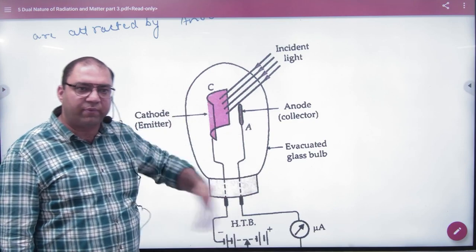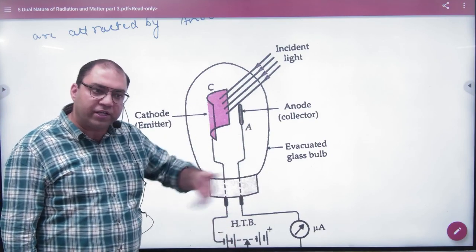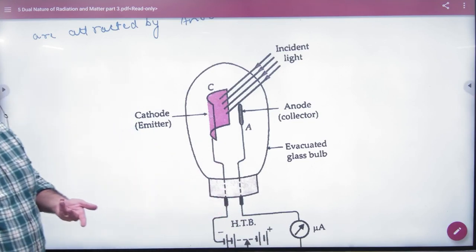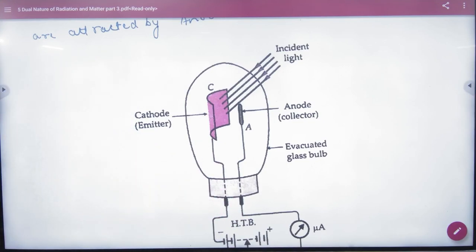So the current in the circuit increases. The battery has its own current, and the current increases because of photoelectric emission. So you can convert light into electrical energy.